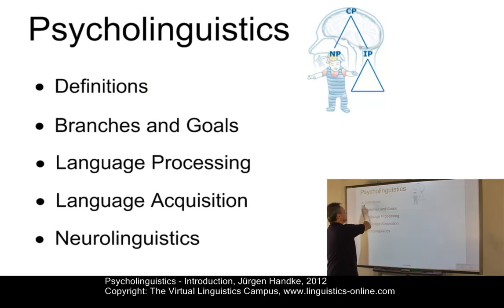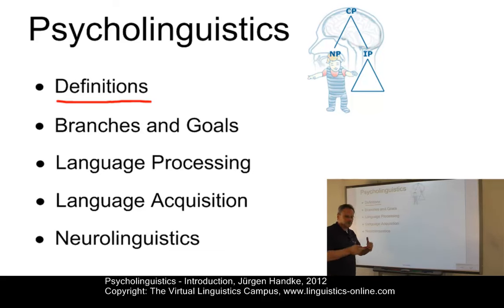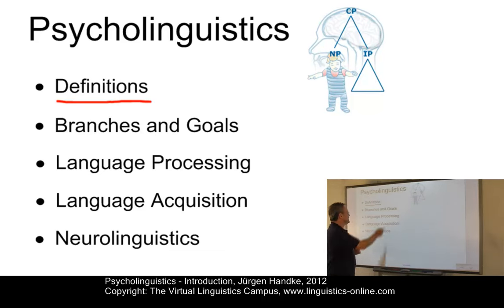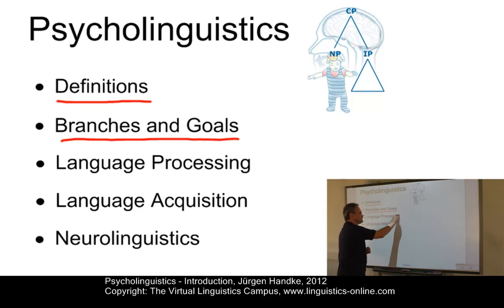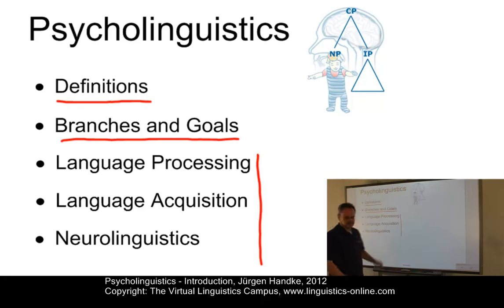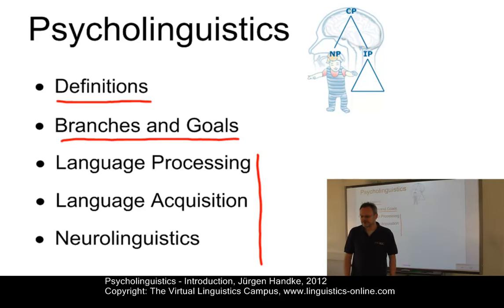First of all, we will look at the central definitions of the two component parts of this hybrid term. Then, we will look at the main branches of psycholinguistics and their goals. And finally, we will concentrate on the main branches of the field.